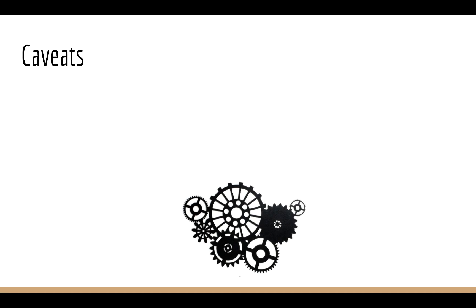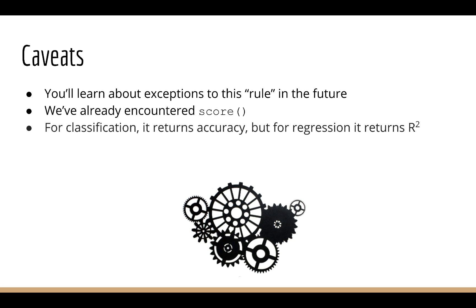In the future, you'll see that there are minor caveats to this rule. One we've already encountered. We know that the score function gives us back some number that tells us how good the model is. But we know that for classifiers and regressors, the score represents something different. For example, for classification, we want accuracy. For regression, we want the R-squared.